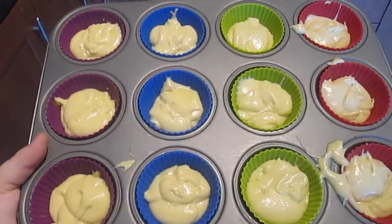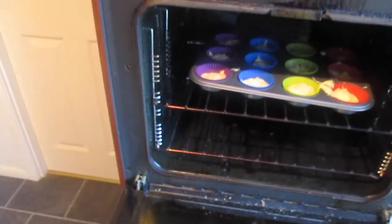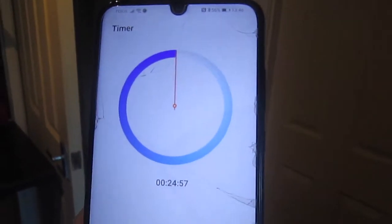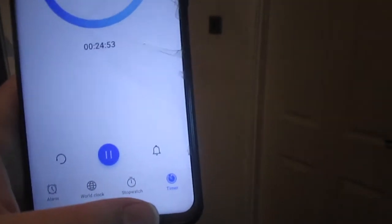And now it's time to put these into the oven. My cupcakes are now going into the oven and you can now cook them for 20 to 25 minutes. So once they're ready, I'll move on to the icing.